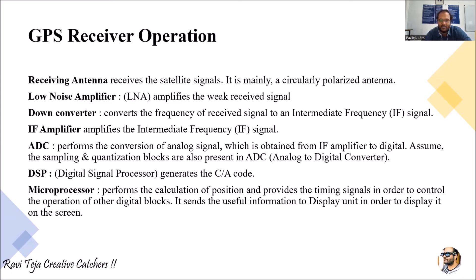Next comes the DSP — digital signal processor. This is where the main processing is done, which generates the C/A code. All GPS receivers receiving the strongest signal will look for the matching of a C/A code in order to correlate with a particular satellite. The DSP generates that C/A code to match and correlate with the satellite's pattern.